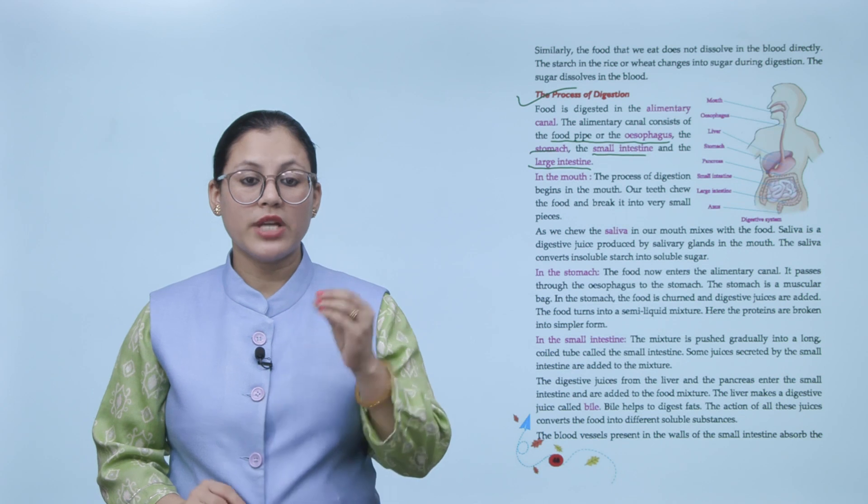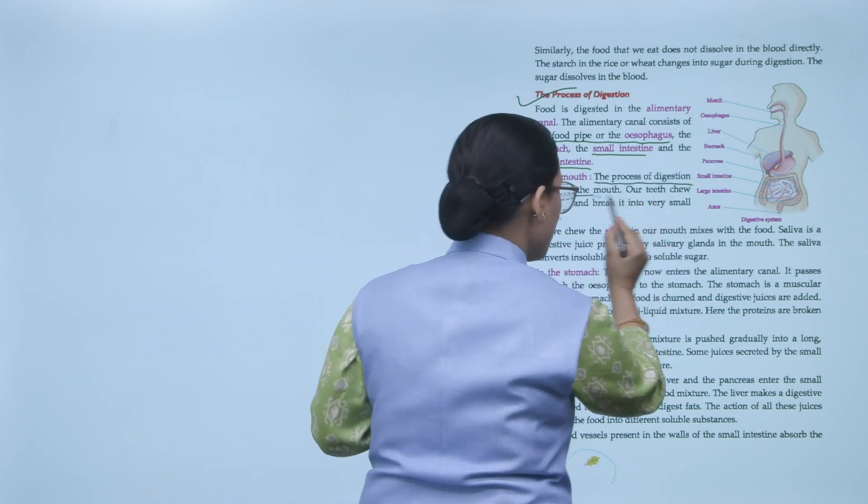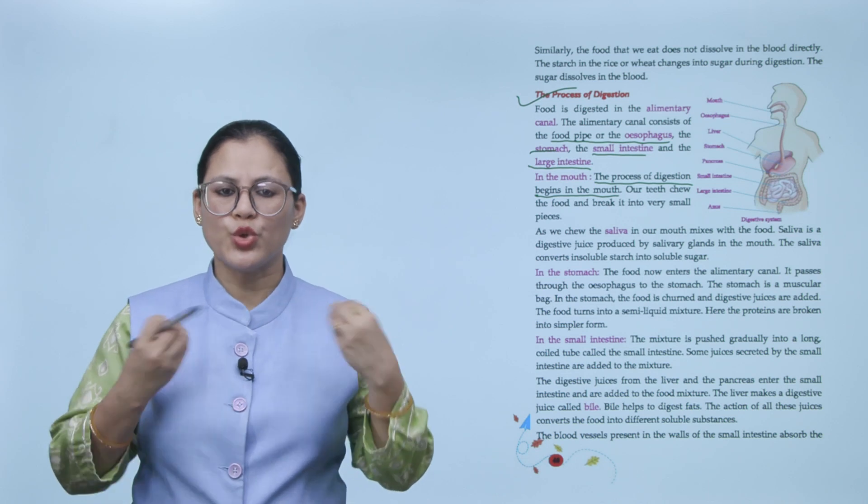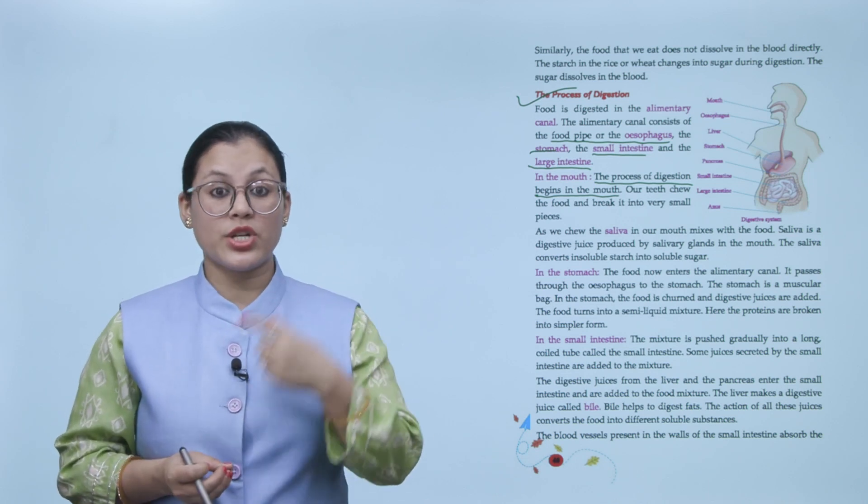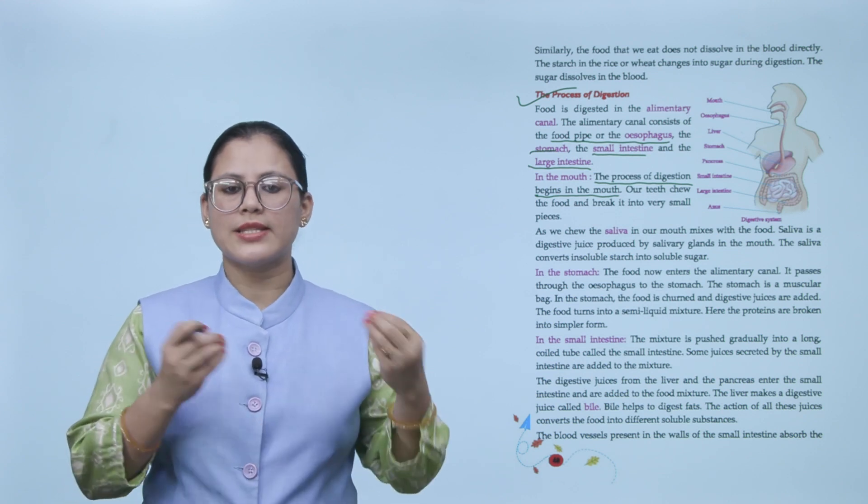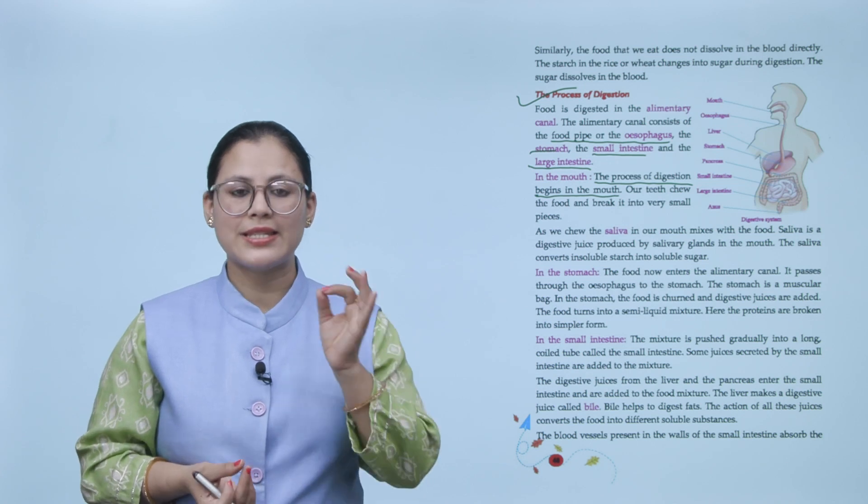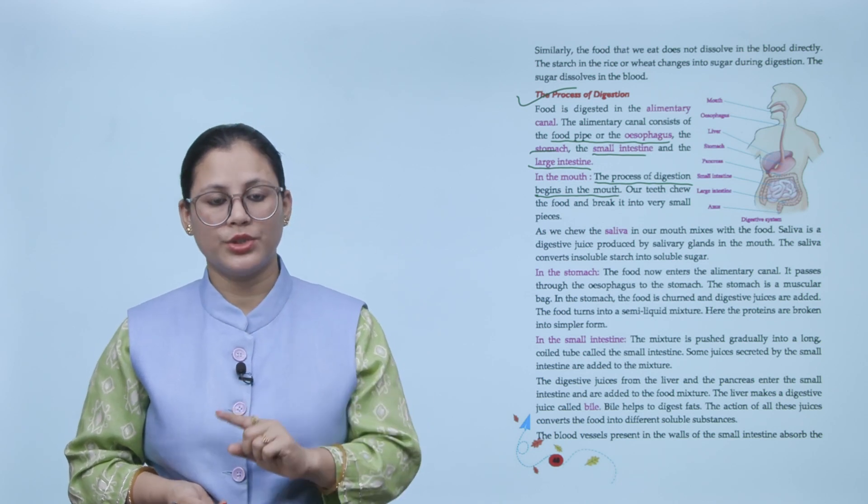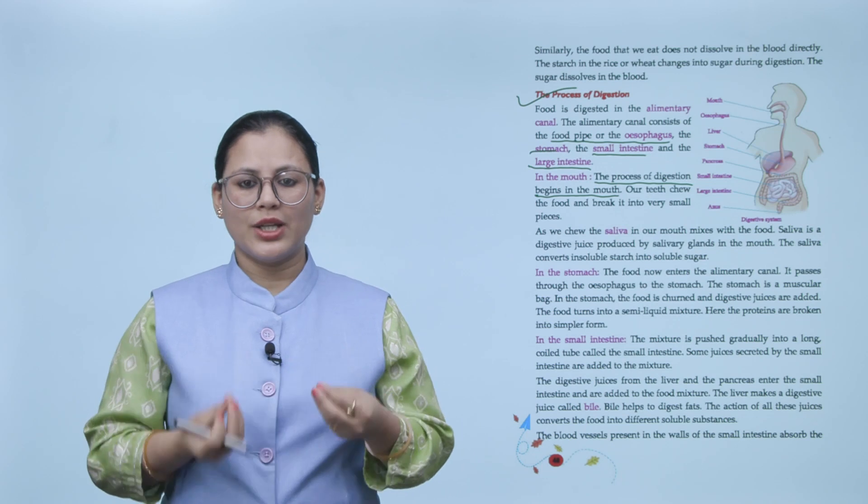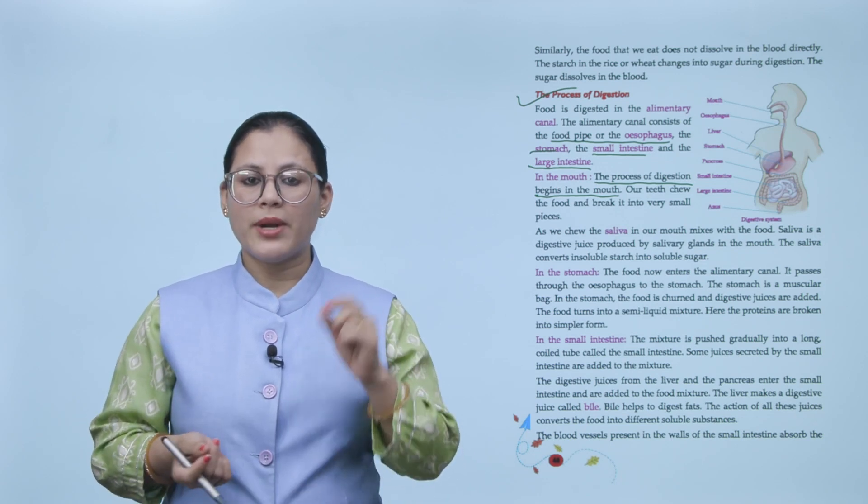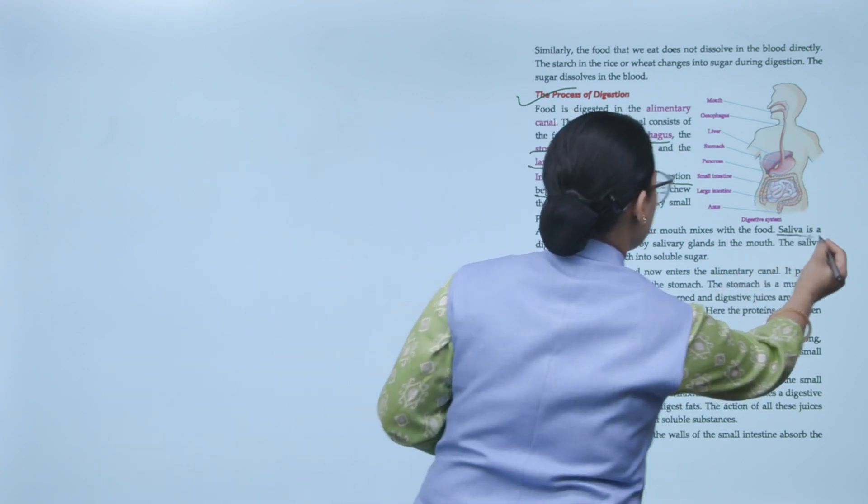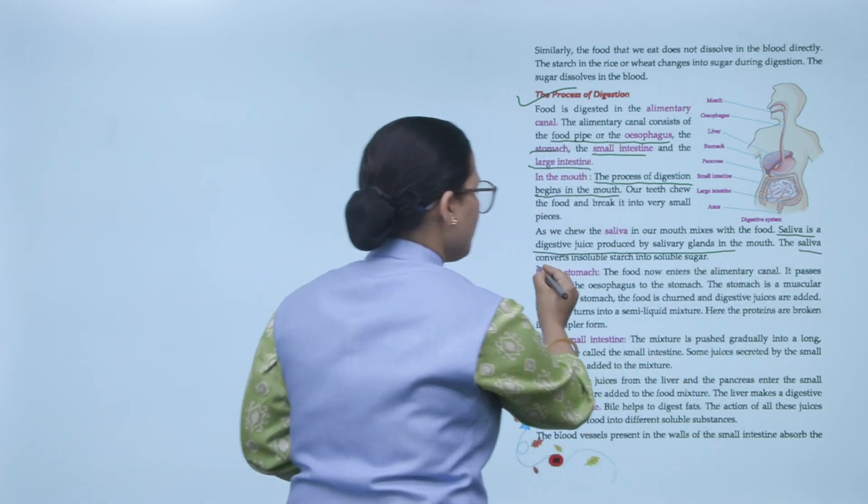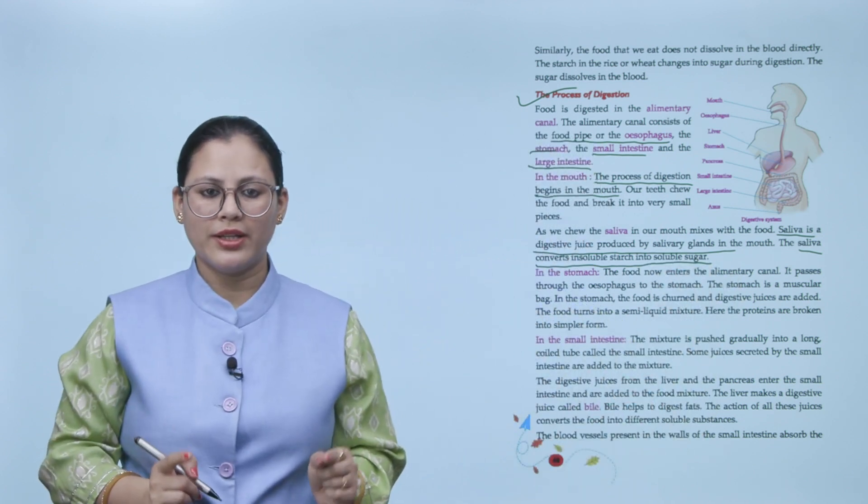In the mouth. The process of digestion begins in the mouth. Remember that. Digestion starts from the mouth. Our teeth chew the food and break it into very small pieces. Our teeth chew the food and break it into small pieces. That is why digestion starts from the mouth. As we chew, the saliva in our mouth mixes with the food. Saliva is a digestive juice produced by salivary glands in the mouth. The saliva converts insoluble starch into soluble sugar. When we chew the food, saliva which is in our mouth mixes with the food. Saliva is a digestive juice which is produced by salivary glands in the mouth. The saliva's function is that it converts insoluble starch to soluble sugar.